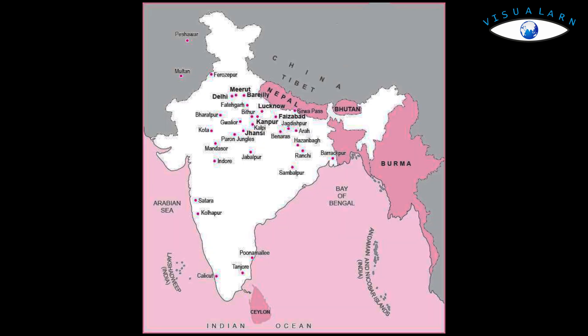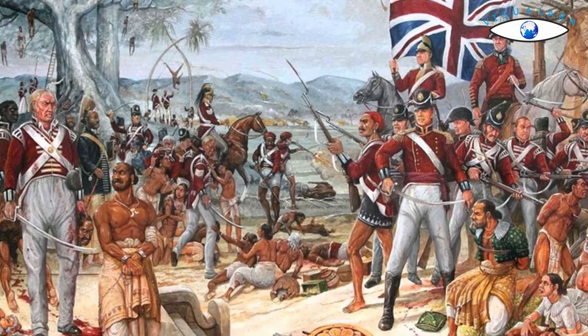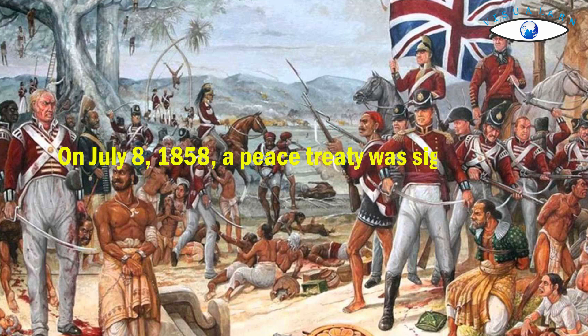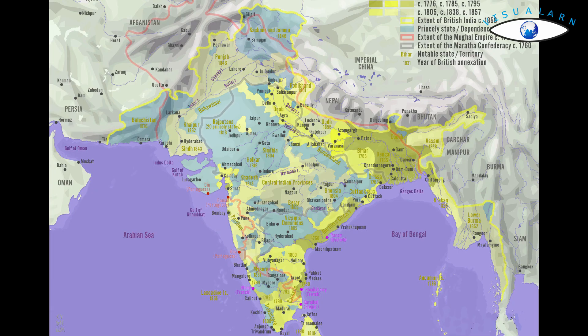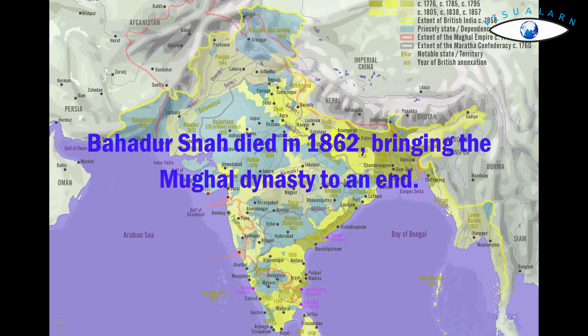Lucknow was taken in March 1858. On July 8, 1858, a peace treaty was signed and the rebellion ended. Bahadur Shah was arrested at Humayun's tomb and was exiled to Rangoon, where he died in 1862, bringing the Mughal dynasty to an end.